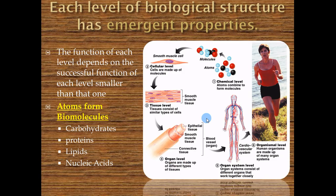Everything starts as atoms, and the atoms form biomolecules. The primary biomolecules are carbohydrates, proteins, lipids, and nucleic acids. Carbohydrates we usually think of as sugars like glucose. Proteins are kind of like the LEGOs of the body — they stick together and form strong structures; your bones are made of long chains of proteins cemented with calcium, phosphate, and magnesium. Lipids are there for energy storage and padding. Nucleic acids like RNA and DNA hold the genetic code for life.